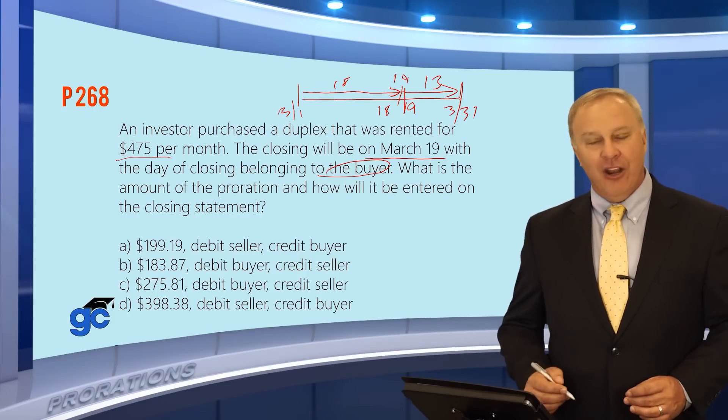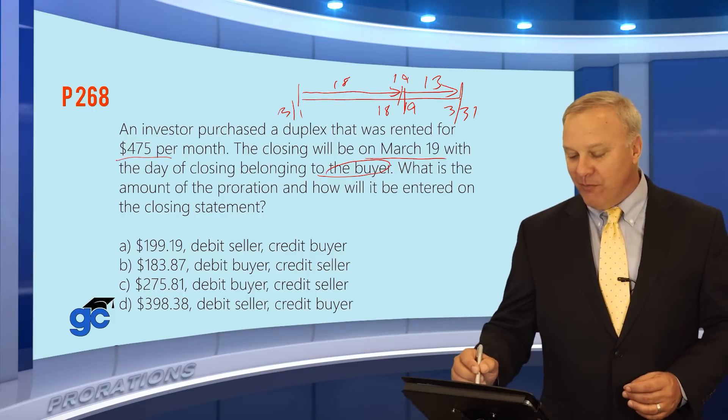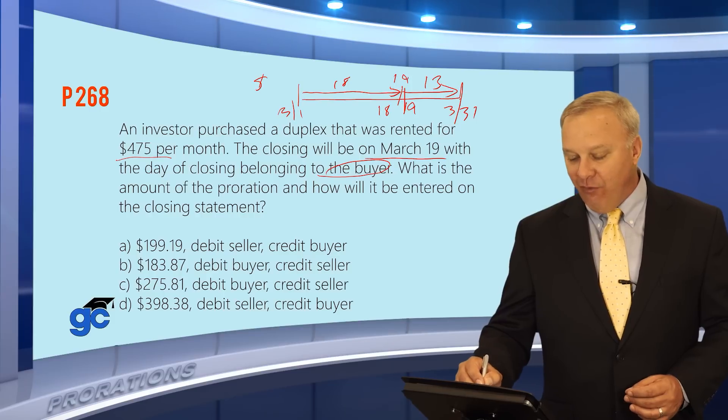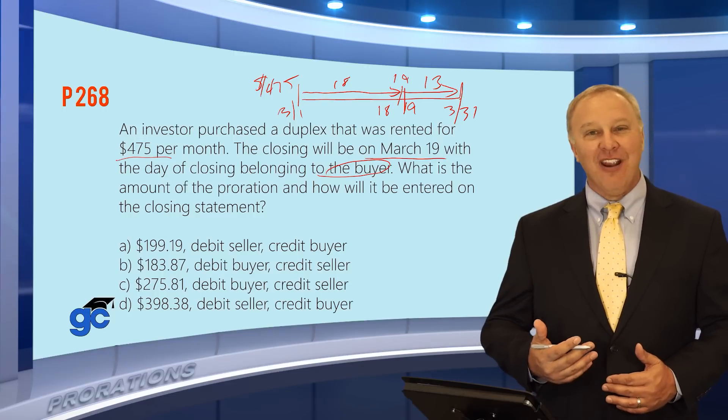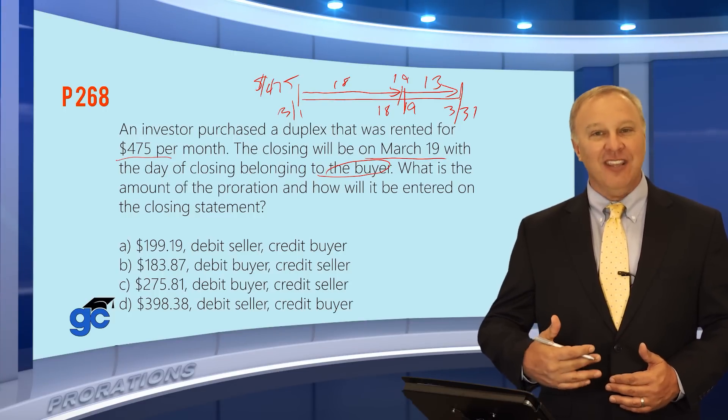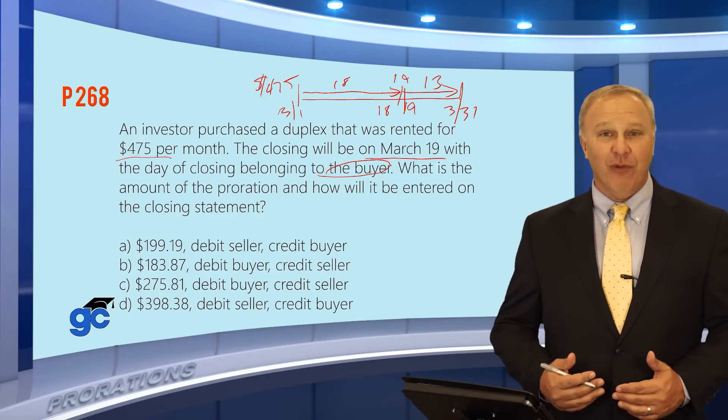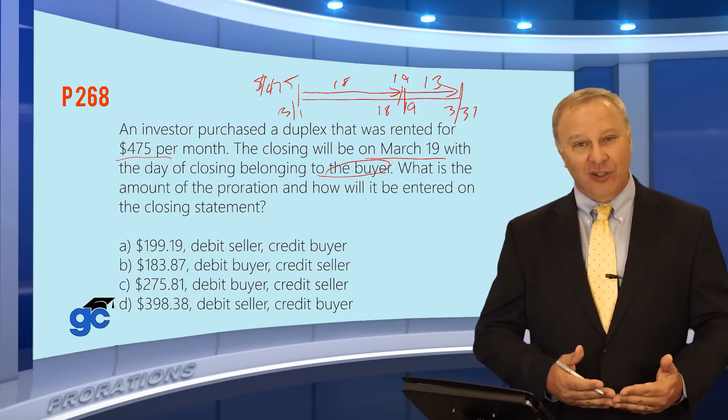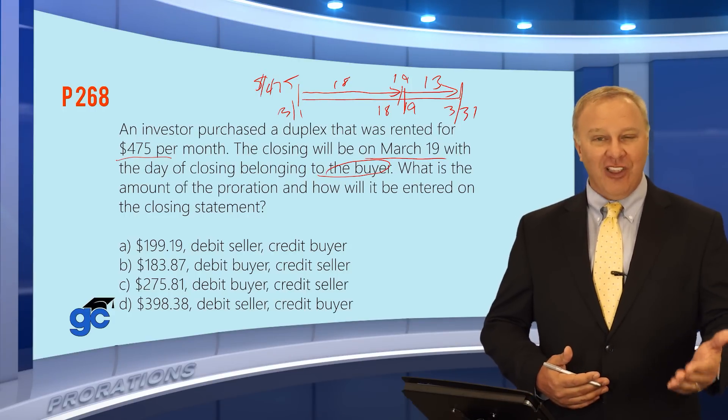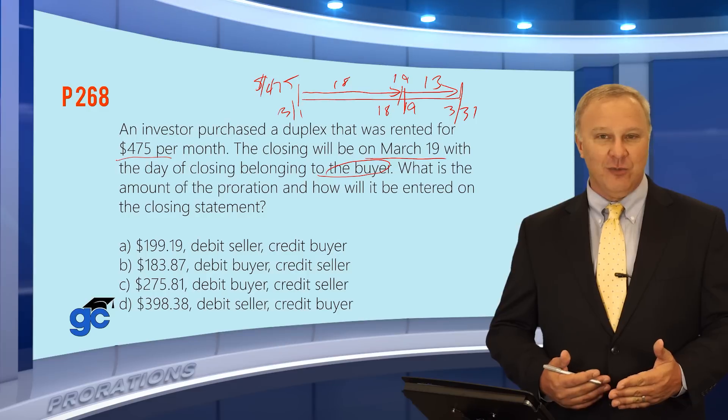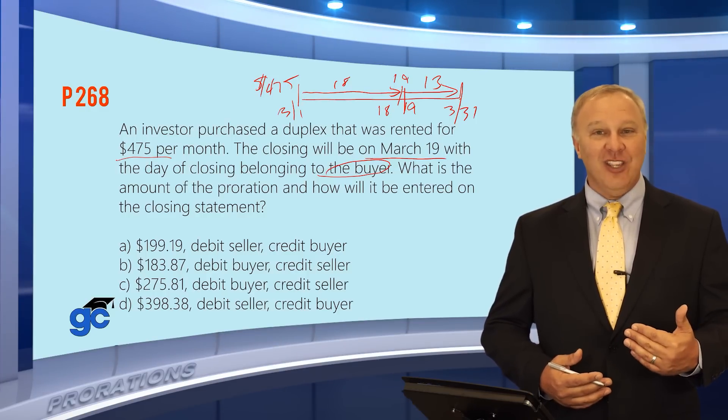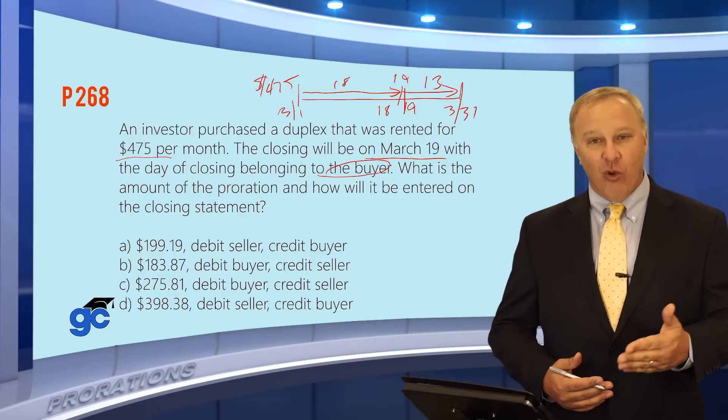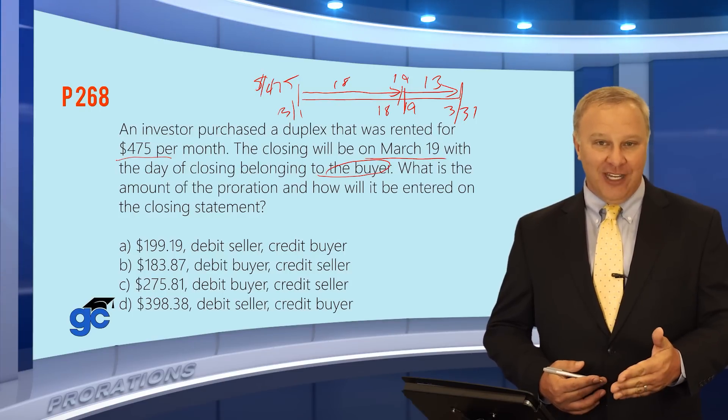But what happened here? What happened is on the 1st of the month, the seller collected $475. But they're not entitled to that for the entire month, they're only entitled up until the day of closing, or in this case, the day before closing. So the seller is entitled to 18 days, but the seller collected rent for the full 31 days. So what happens at closing? Well, at closing, the seller is going to be charged for the 13 days that they owe the buyer, and the buyer will be credited.